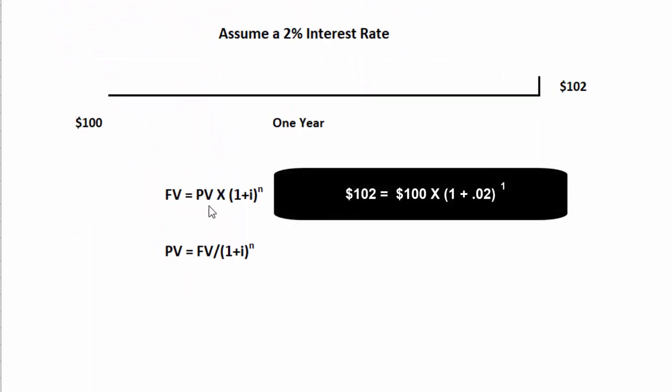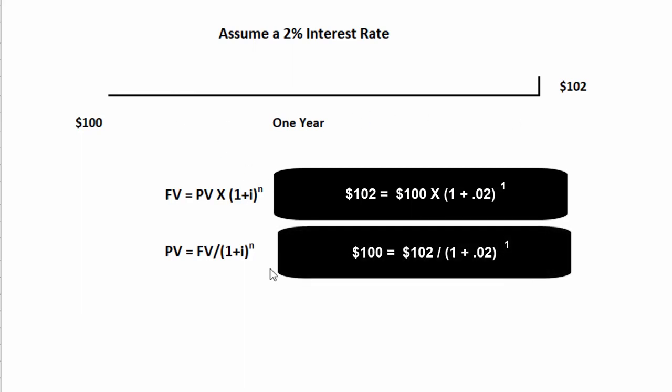The future value is equal to the present value times 1 plus the i, the interest rate, raised to the nth power - in this case 1 because there's just 1 year. We can divide both sides of that equation by the 1 plus i to the nth and discover the formula for the present value of a lump sum: PV equals the future value divided by 1 plus i to the nth.